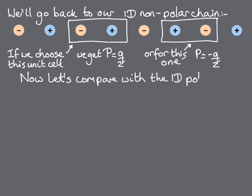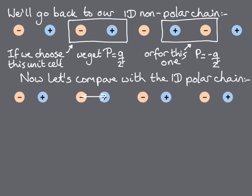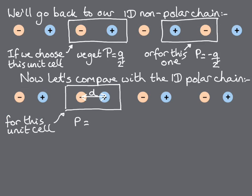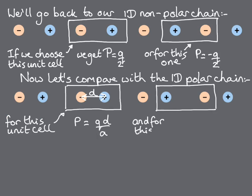Now let's repeat this procedure, calculating the dipole moment per unit volume for the same two unit cells in the one-dimensional polar chain. This time, the polarization for the left-hand unit cell is q times d over a, whereas that of the right-hand unit cell is qd over a minus q.